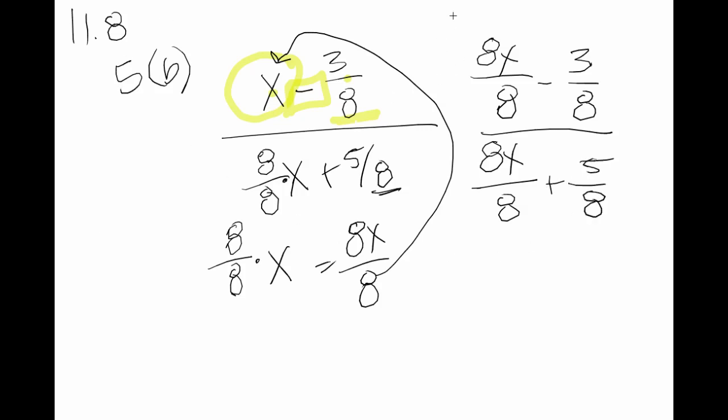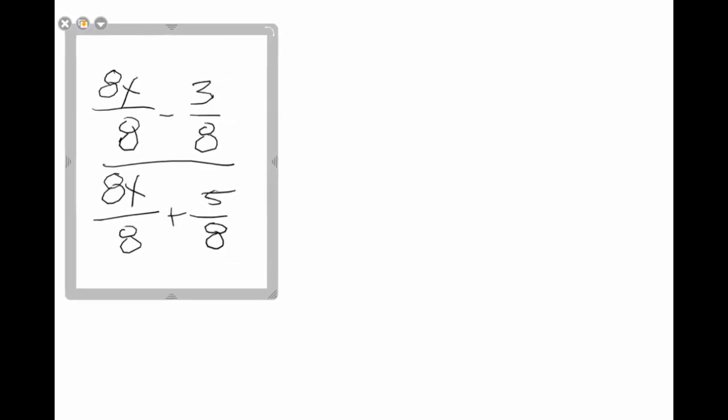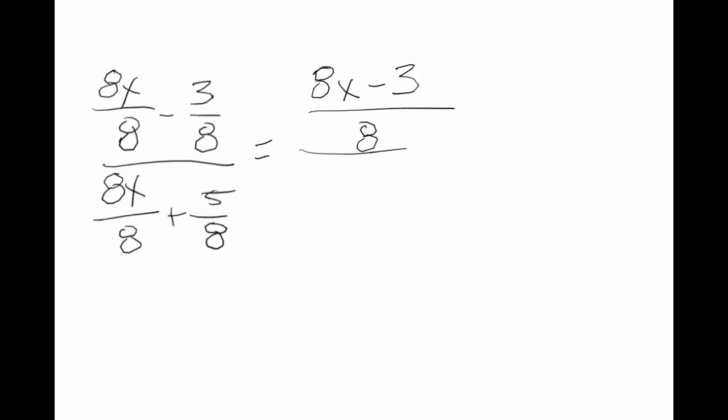Now, I grab this and I'm going to go over to a new page where I have more room to write. And what we do is then we can actually just subtract and add like normal. 8x minus 3 over 8 is what I end up with in the numerator. And I have 8x plus 5 over 8 in the denominator.